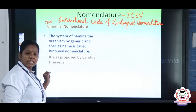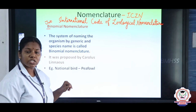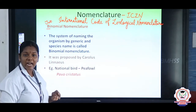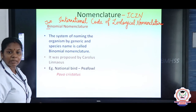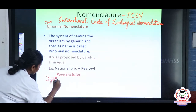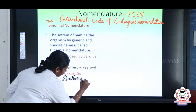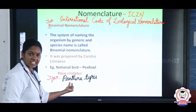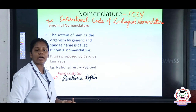Binomial nomenclature was proposed by Carolus Linnaeus. Our national bird is the peacock — its scientific name is Pavo cristatus. Take a notebook and note down all these scientific names. Our national animal is the tiger — its scientific name is Panthera tigris. 'Panthera' is the genus name and 'tigris' is the species name. Since it has two names — generic and species — it is an example of binomial nomenclature.